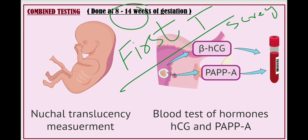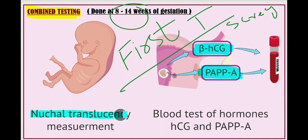The most important among all is the combined test. Combined testing basically includes three main parameters: beta-HCG, PAPP-A — which means pregnancy-associated plasma protein A — and nuchal translucency. There is a specific mnemonic for this: beta, papa, and anti. Beta is for beta-HCG, papa is for pregnancy-associated plasma protein A, and anti is for nuchal translucency.